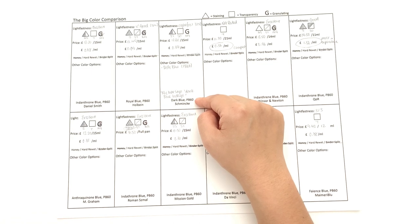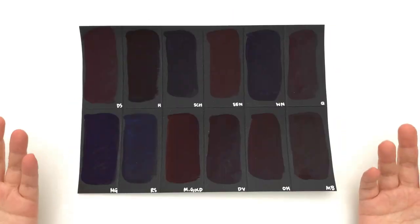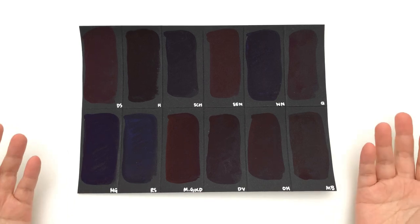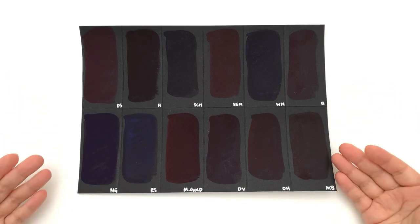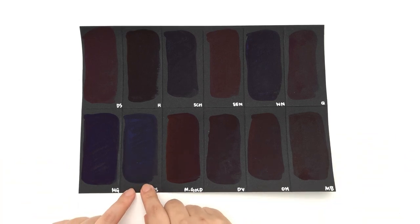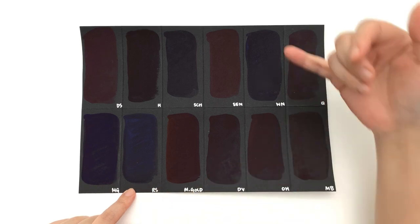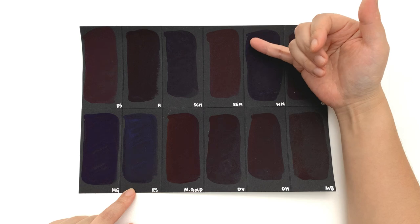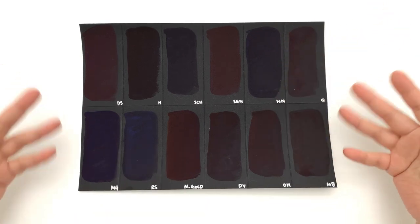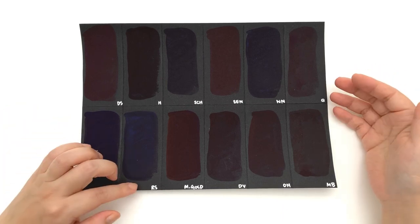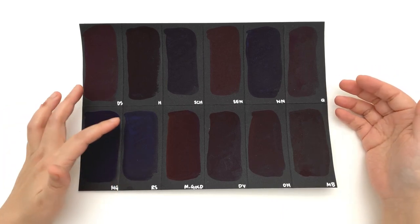Let's have a look at the opacity. Indanthrone Blue should be pretty transparent, and most of these are. However, I do notice that there are some deposits showing quite opaquely on the Roman Szmal, and then a little bit on the Windsor Newton but only a very, very tiny bit.